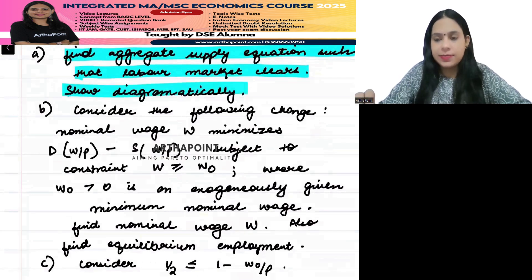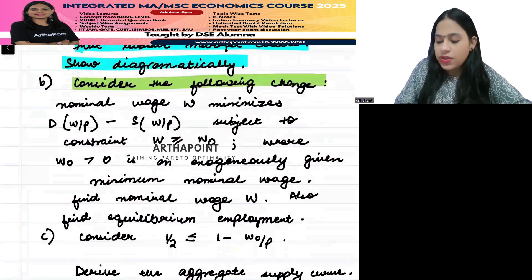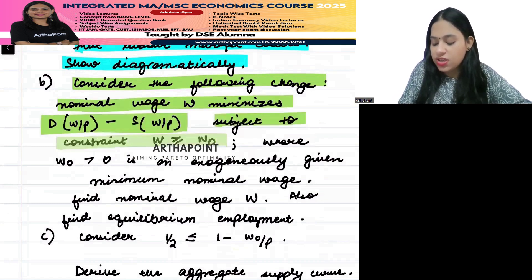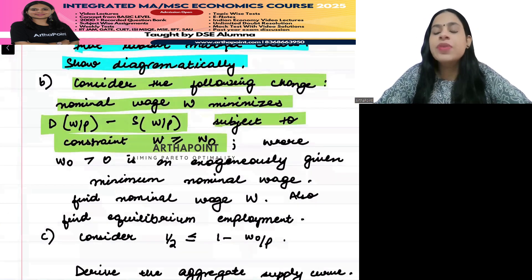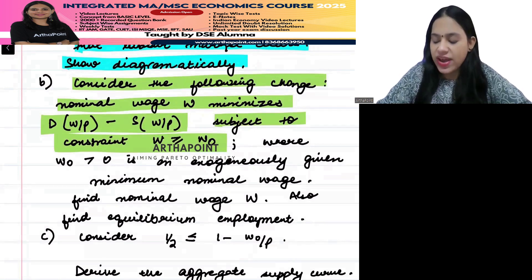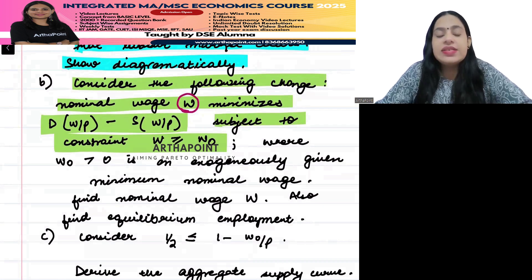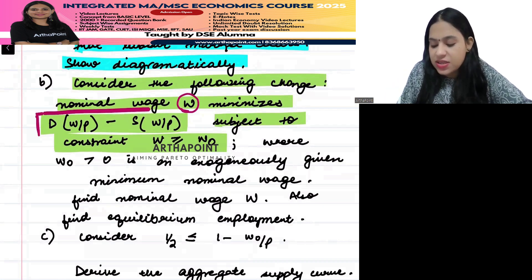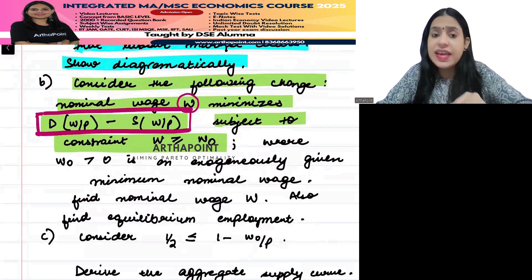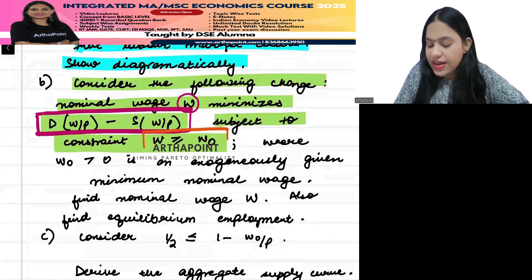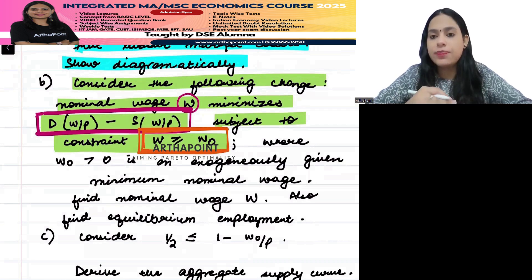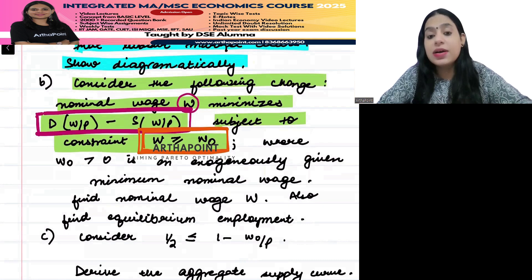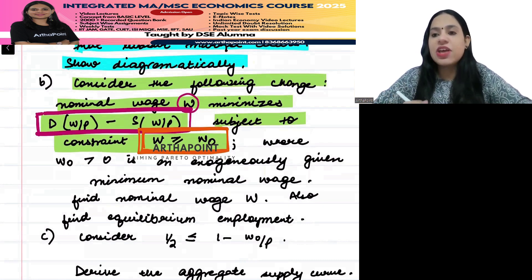Then it says show diagrammatically. Second, look here. It says consider the following change: nominal wage minimizes the gap between demand and supply subject to constraint that W is greater than or equal to W naught. It is saying assume that there is some nominal wage W that minimizes the gap between demand and supply of labor. But there is a constraint that this nominal wage is at least more than a particular threshold. It's more than some W naught, more than some wage that has been set by the government.